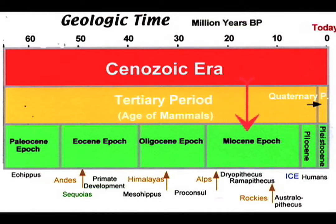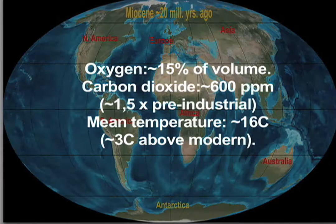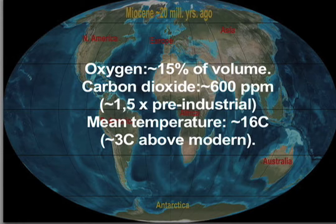The Miocene Epoch. Oxygen: about 15% of volume. Carbon dioxide: about 600 parts per million, about 1.5 times pre-industrial.